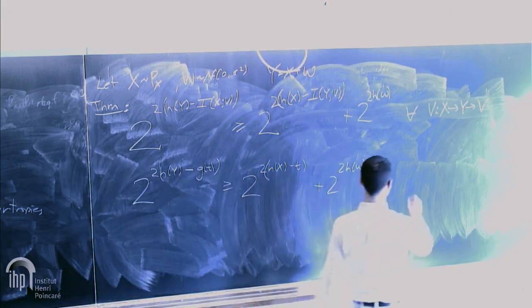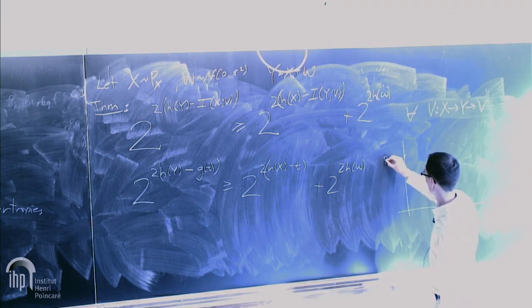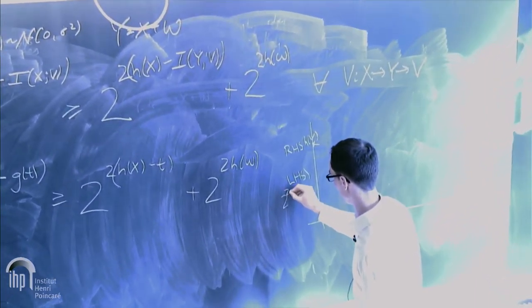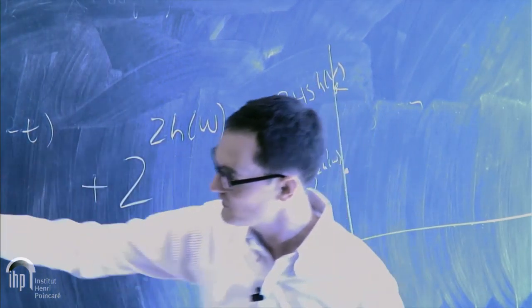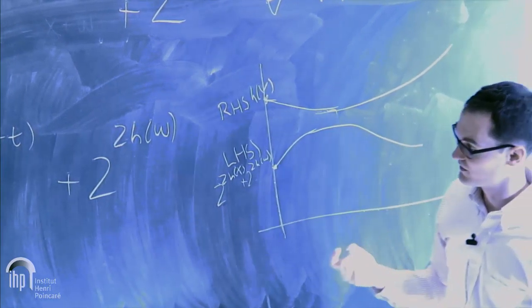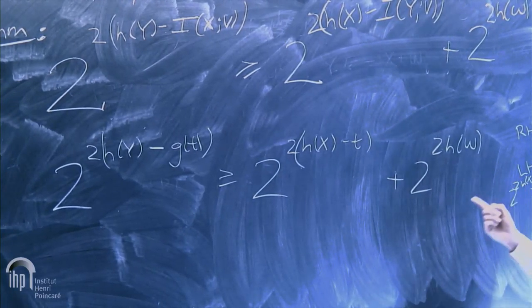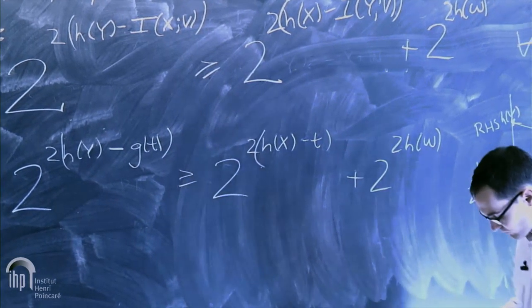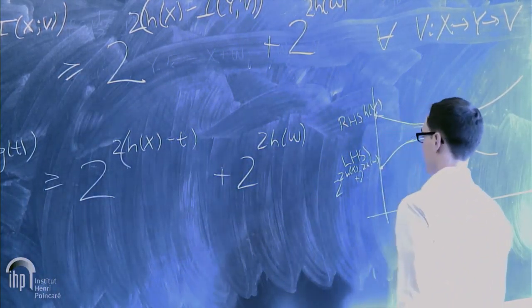We can rewrite this as: 2^{2h(Y) − g(t)} ≥ 2^{2h(X) − t} + 2^{2h(W)}. By tracing along the curve at different points — if we understand the mutual information trade-off — we can induce corrections in these exponents and make the EPI tighter. Both exponents on the right decrease, but the noise term stays fixed, ultimately tightening the inequality.